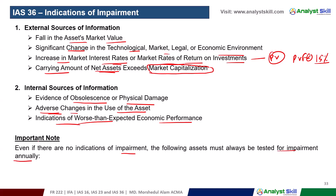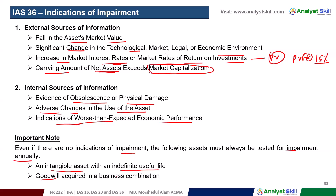The following assets must be tested for impairment annually, even without any indication: intangible assets with an indefinite useful life, such as trademarks.